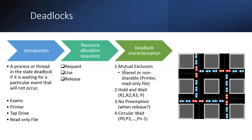The first condition is Mutual Exclusion. We have to execute processes in a mutually exclusive way. In the previous topic we studied process synchronization — at a time one process executes. Mutual exclusion means one process at a time; multiple processes cannot execute simultaneously.